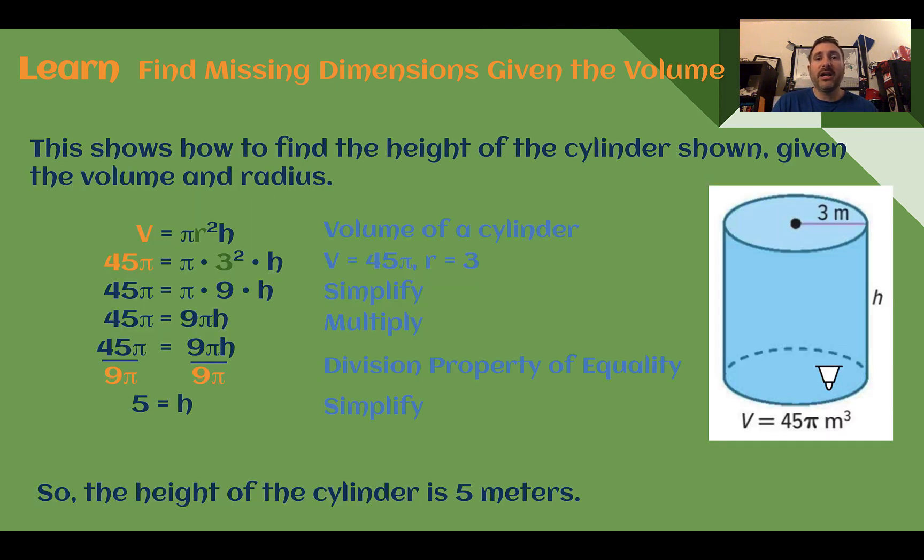Here we can see how to find the height of a cylinder shown, when we're given the volume and the radius. It tells us down here the volume was 45π. They were nice and left it in terms of pi for us. Our radius was 3. We're trying to figure out our missing height.